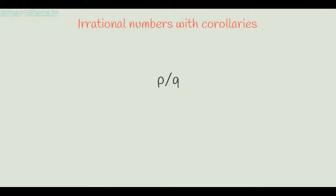Let's take some prime numbers: 2, 3, and 5. The square roots of these numbers are always irrational. Let me prove a theorem first, and then we will prove whether the square root of a prime number is irrational or not.